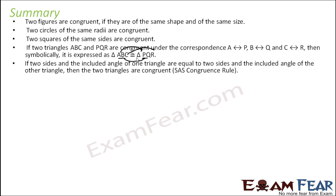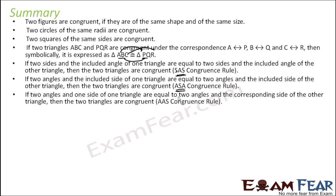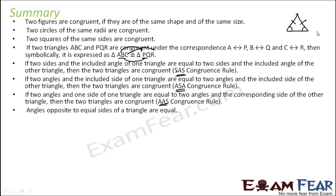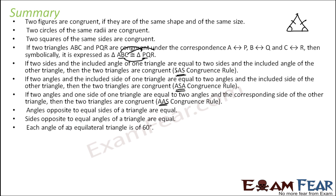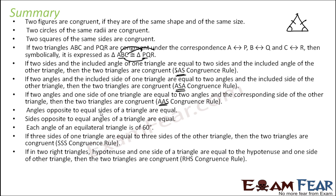If two sides and the included angle of one triangle are equal to the corresponding sides and included angle of the other triangle, then the triangles are congruent by SAS (side-angle-side) congruence rule. If two angles and the included side are equal, they are congruent by ASA rule. If two angles and one non-included side are equal to corresponding parts of the other triangle, they are congruent by AAS rule. If three sides of one triangle are equal to three sides of another, they are congruent by SSS (side-side-side). In two right triangles, if the hypotenuse and one side are equal, they are congruent by RHS.